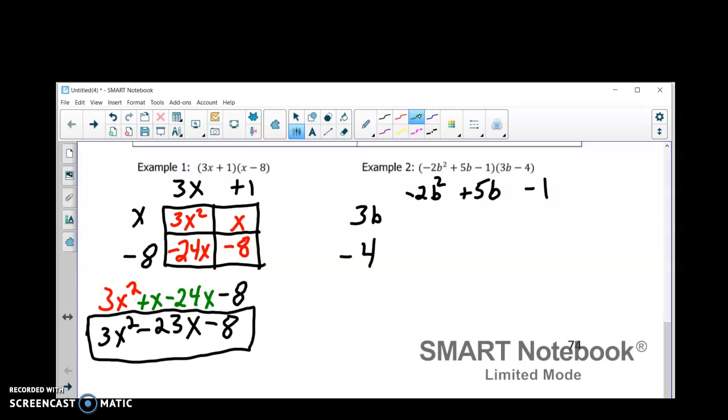So, I'm going to multiply the first one. So, 3 times 2 is 6. The 2 is negative. 3 is positive. So, it's going to be a negative. B times B squared is going to be B. Remember, we have to add the exponents. 1 plus 2 is 3.